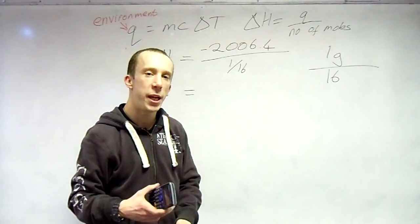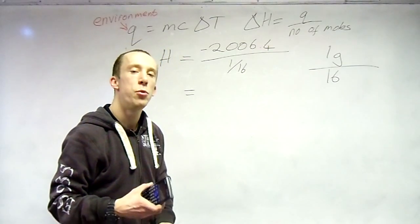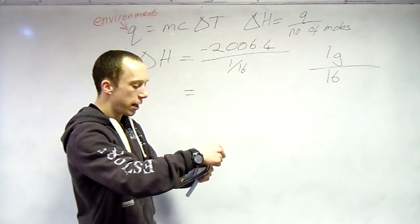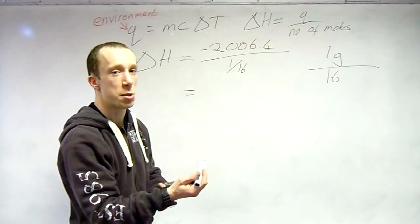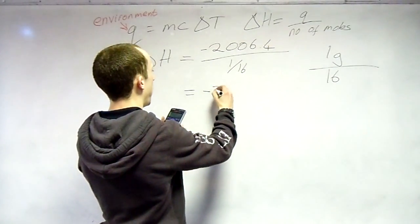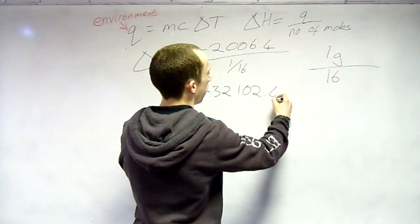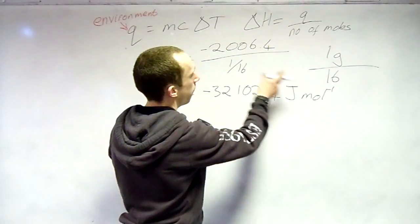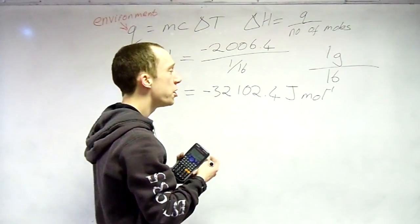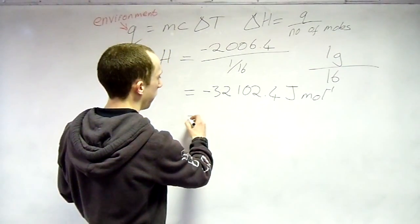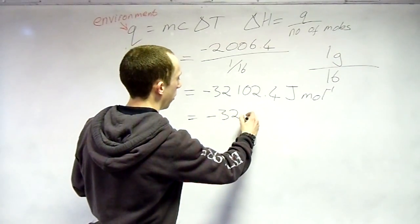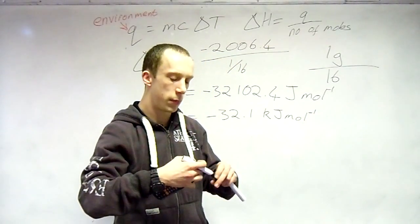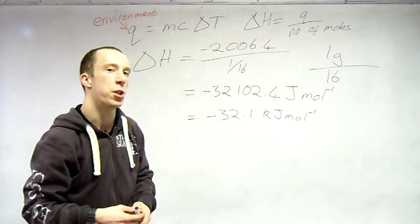You will always get big numbers for this. Beware of that. Do not be surprised if they are in the hundreds of thousands or even millions. So the answer I've got here is pretty low. But as I said, I just made these numbers up. I've got minus 32,102.4 joules per mole. Notice where the per mole has came from. We are dividing by a mole here. If you want, you can convert to kilojoules. So three significant figures. And there we have an enthalpy calculation. Thank you.